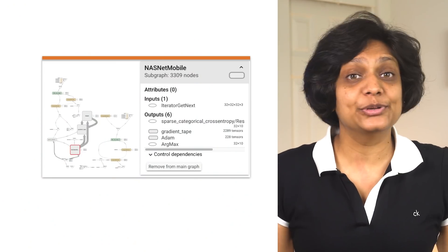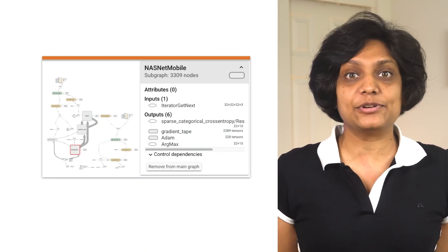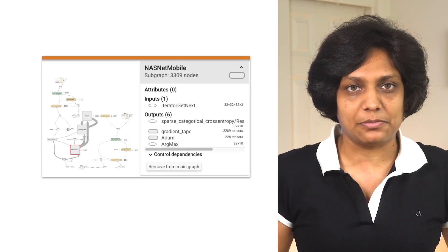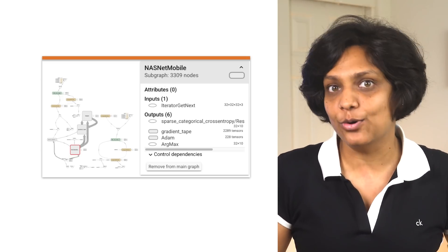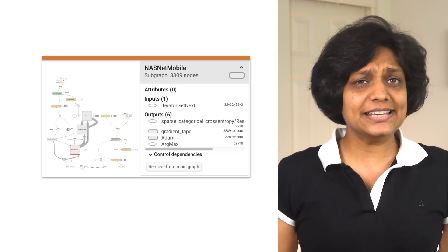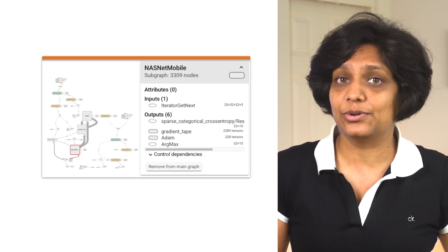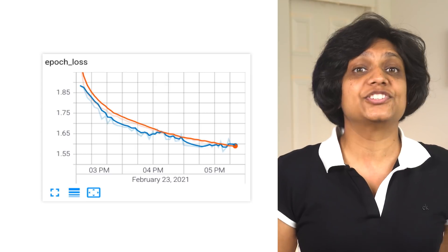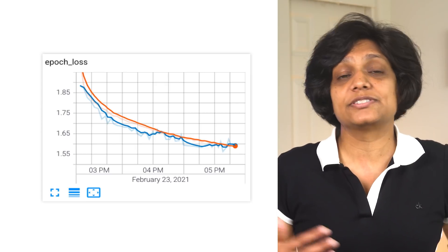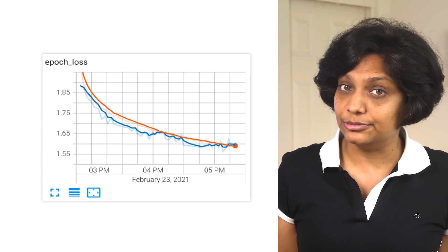Let's say I'm playing around with a powerful, complex image classification model, such as NASNet, and training it in Colab. It takes a couple of hours to train with the free GPU that Colab gives me. Also, it may not even be feasible to train on large datasets because the training could go over the free 12-hour window.